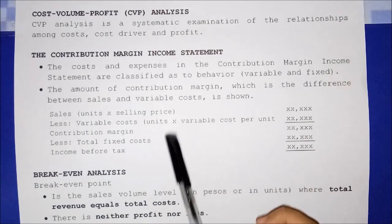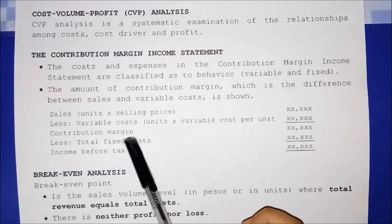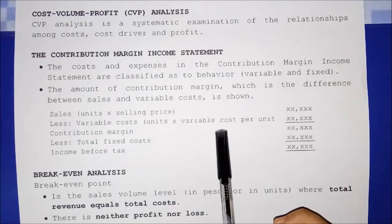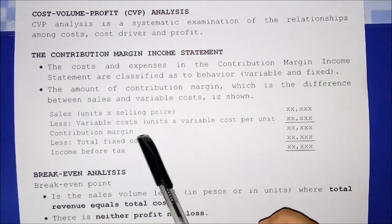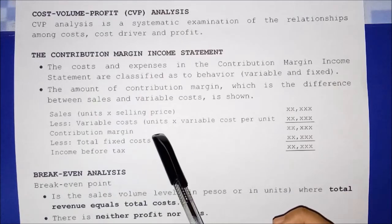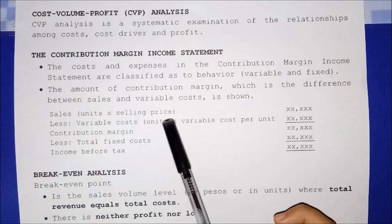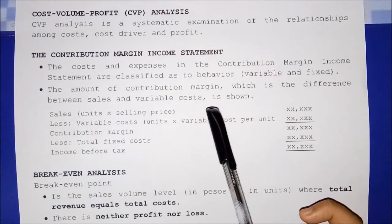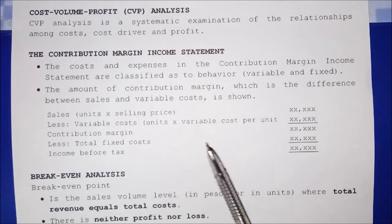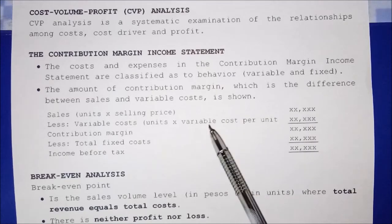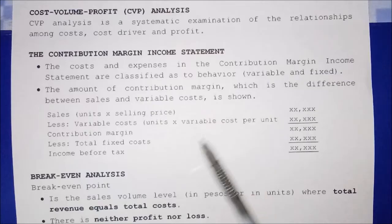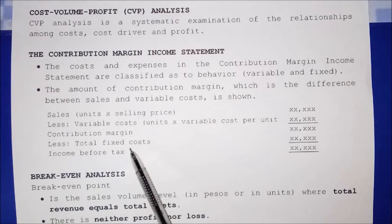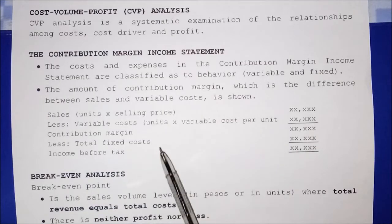Expenses are classified as to behavior — variable and fixed. Variable costs are costs that change in total as the level of activity changes. Examples include direct materials, direct labor, and some factory overhead. The more production, the more direct materials and direct labor cost.